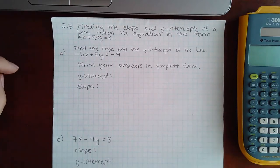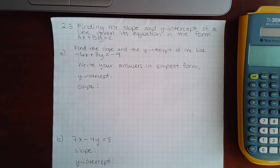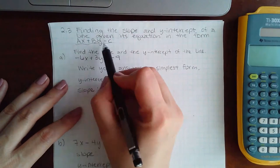Here we have finding the slope and y-intercept of a line given its equation in the form AX plus BY equals C. This is standard form.